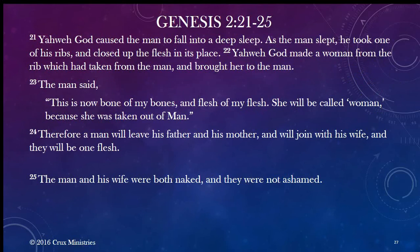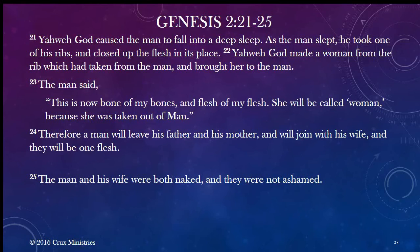Next paragraph is Genesis 2:21-25. Sarah reads: 'Yahweh God caused the man to fall into a deep sleep. As the man slept, he took one of his ribs and closed up the flesh in its place. Yahweh God made a woman from the rib which he had taken from the man and brought her to the man. The man said, This is now bone of my bone and flesh of my flesh — she will be called woman because she was taken out of man. Therefore a man will leave his father and mother and will join with his wife and they will be one flesh. The man and his wife were both naked and they were not ashamed.'